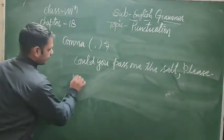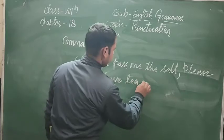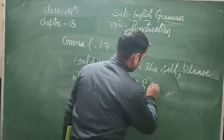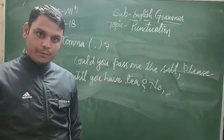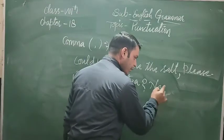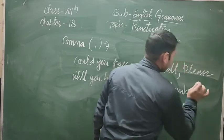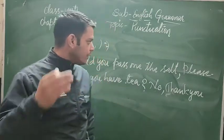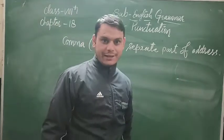'Will you have tea?' — and the answer: 'No, thank you.' यहाँ पर 'no' के बाद comma लगाना है, then 'thank you.' So with humble words like 'please' and 'thank you', you use a comma before them. Now we will also use a comma to separate parts of an address.